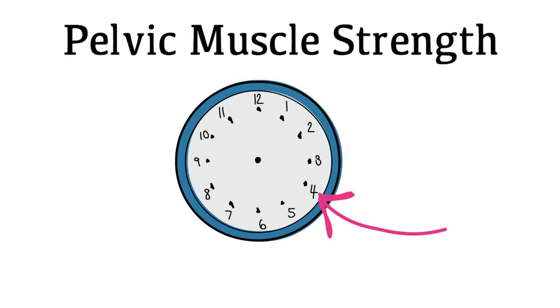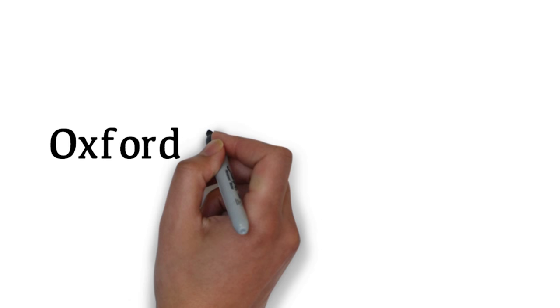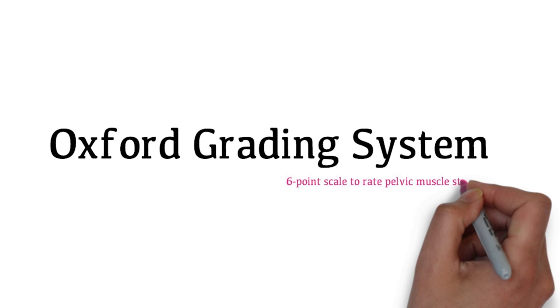Now let's assess for pelvic muscle strength. Place two fingers into the patient's vagina at 4 o'clock and 8 o'clock and ask her to do a Kegel contraction. Assess for the strength of pelvic muscles and any asymmetry. You can use the Oxford Gradient System for pelvic muscle strength. It applies a 6-point scale to rate pelvic muscle strength.